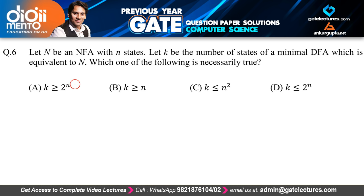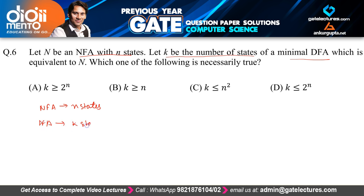Now let us check out question number 6. They are saying: let N be an NFA with N states, and let K be the number of states in a minimal DFA which is equivalent to that NFA. So this NFA and this DFA are both equivalent. They are asking which of the following is necessarily true.